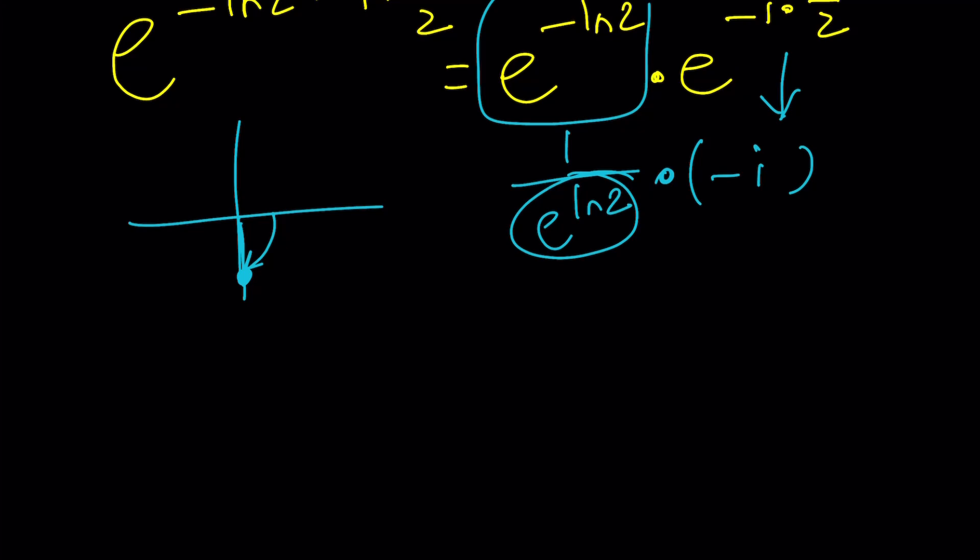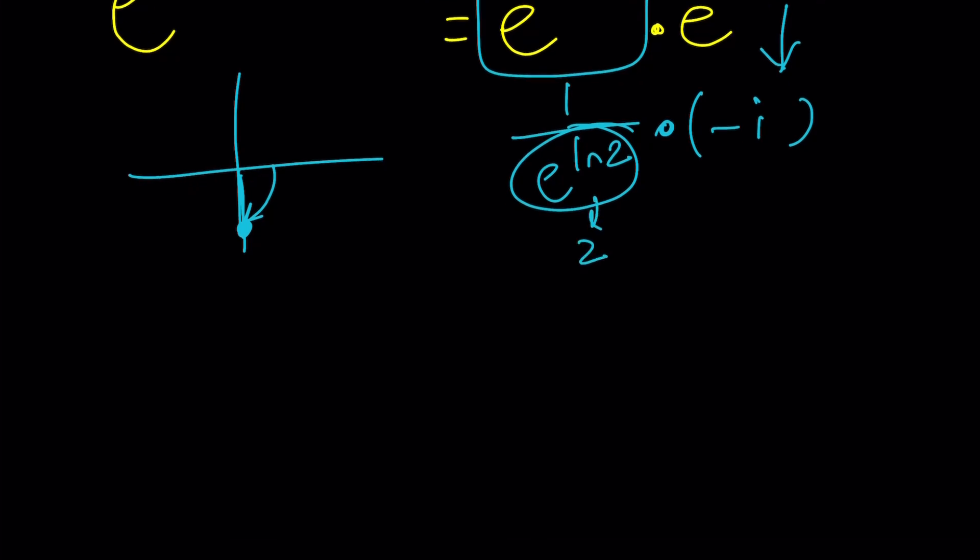So now we got what? This is 2. That's 1 half. Negative i times 1 half is negative i over 2. Wow. Fairly simple, right? When n and k are 0. It's a perfect answer.